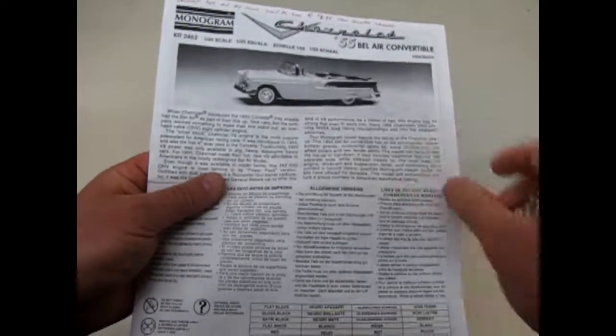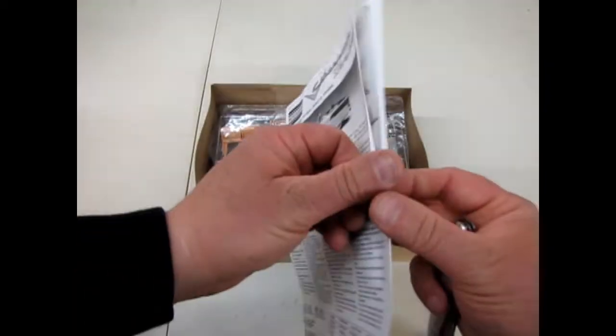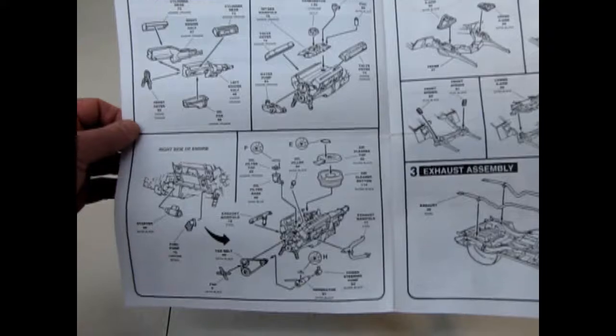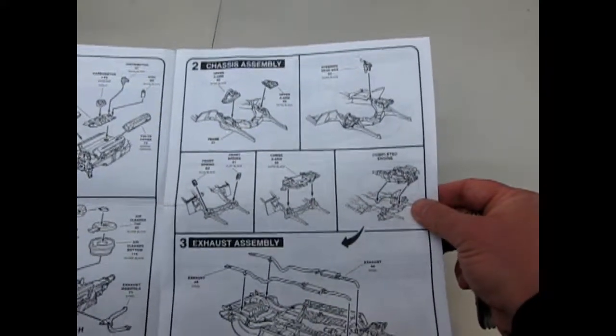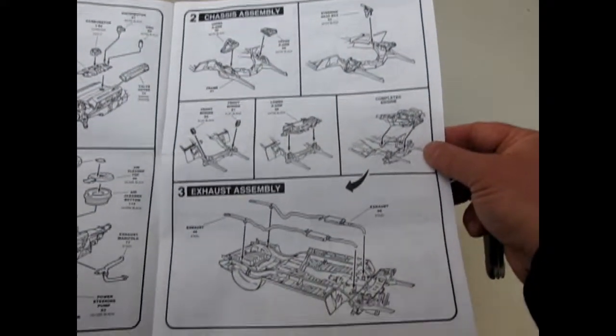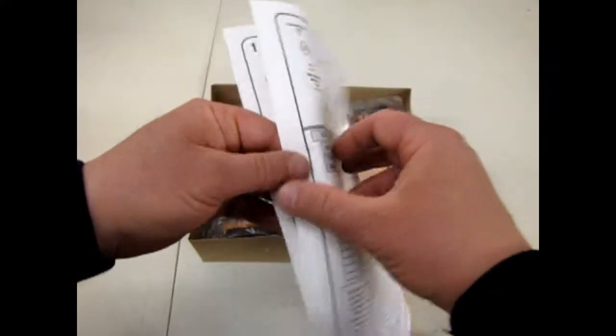Okay so this goes into some description of the types of engines they had in '55 and there's the engine block going together and the chassis with your upper A-arms and lower A-arms, steering box, front springs and your exhaust. As you can see there are quite a lot of parts to this kit.